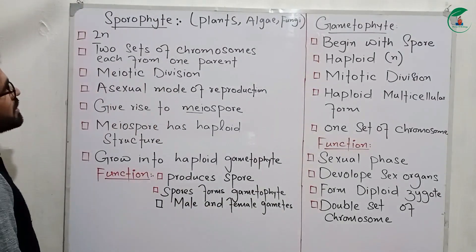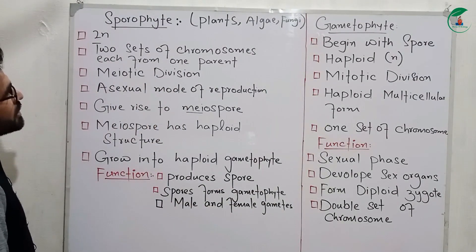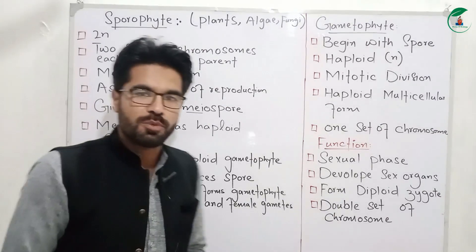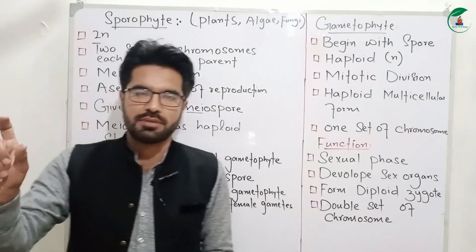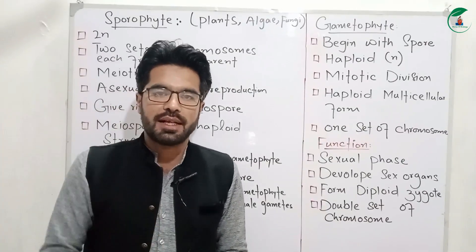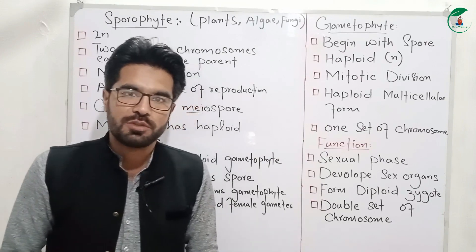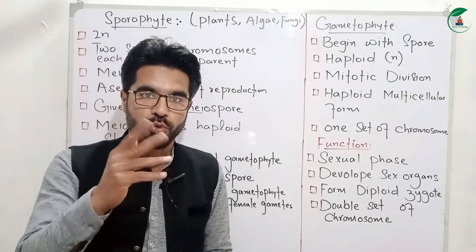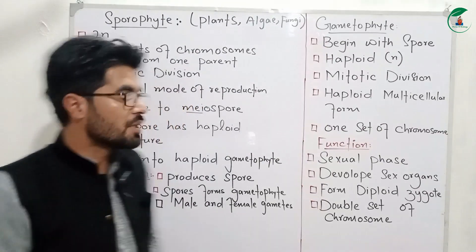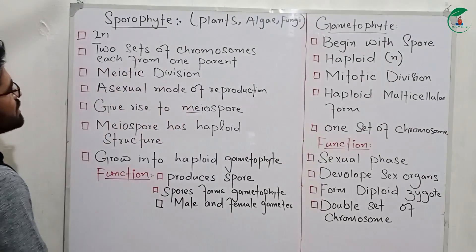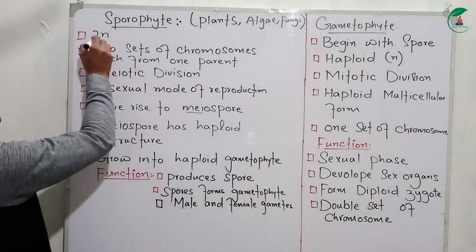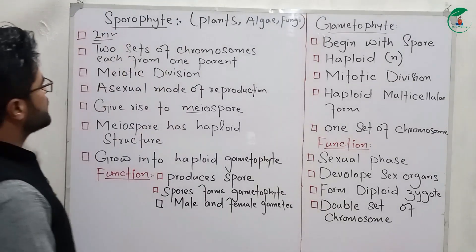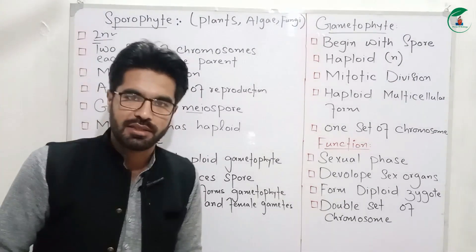This is the sporophytic generation of plants. There are spores that allow the greeting evolved by 2N.